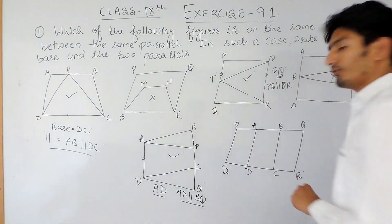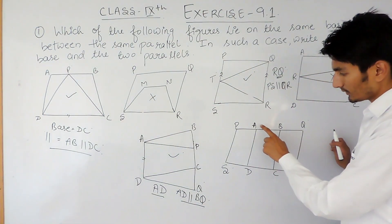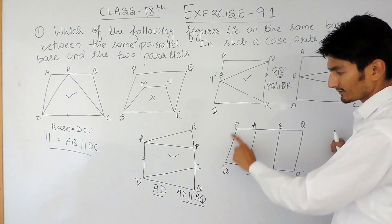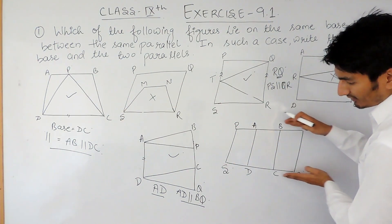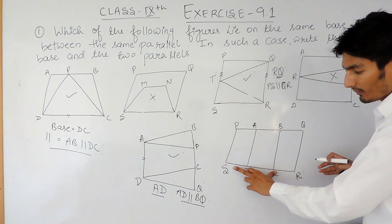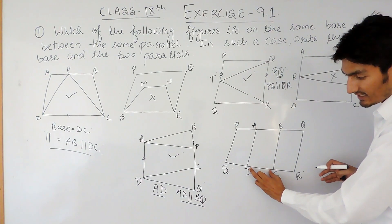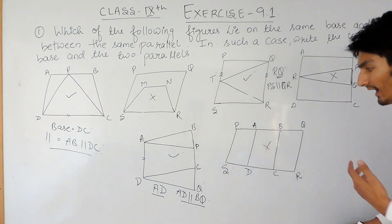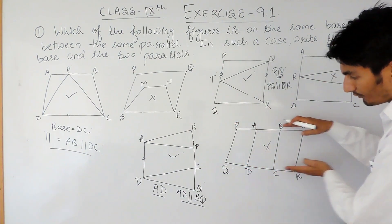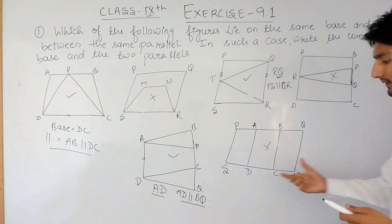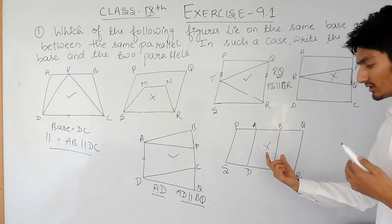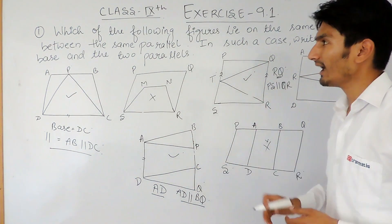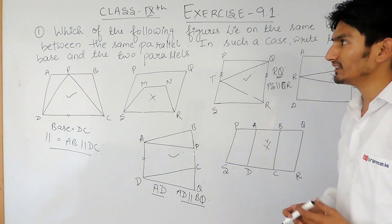In this last figure, again there are two figures — two parallelograms. The first one is ABCD and the second is PQRS. Again they lie between the same parallels, but they do not share the common base. For the first, the base is DC, but for the second, the base is SR. So the two figures lie between the same parallels but do not have a common base, so this is incorrect.